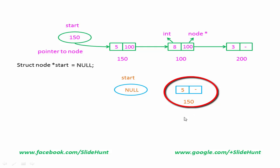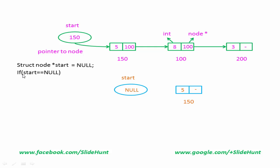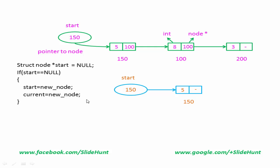Now we adjust the address between the start variable and the newly created node. First we check whether start is equal to NULL: 'if (start == NULL)'. If so, we give the address of new_node to start: 'start = new_node'. So now start contains 150. The next thing we do is copy new_node to the variable current: 'current = new_node'. So now this is the current node.